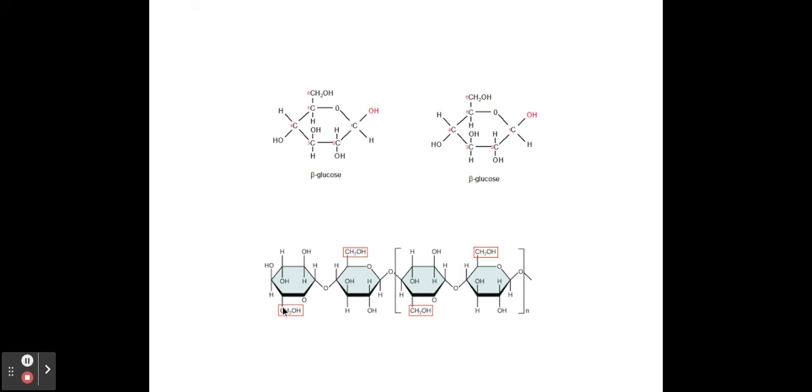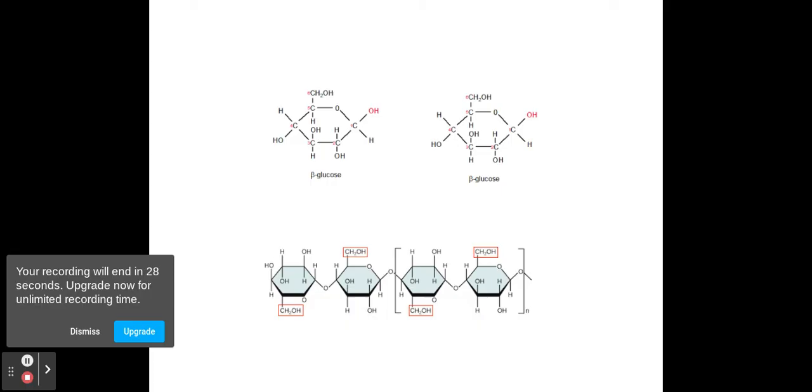You can easily see that there by the side chain here sticking down and then that one's up and then that one's down and that one's up and so on and so forth. Now, this particular bond is called a beta 1 to 4 glycosidic bond. It's still joining carbons 1 and 4, except it's beta glucose. It's a beta bond now.